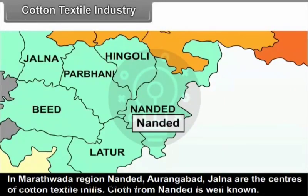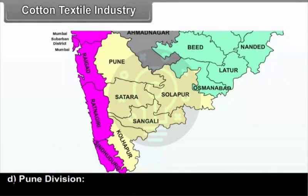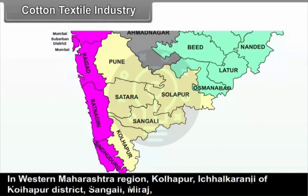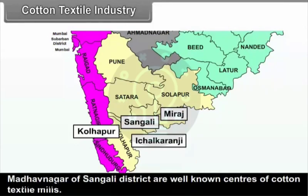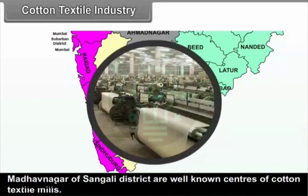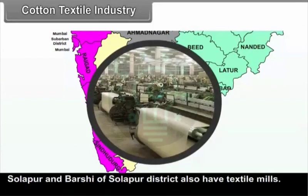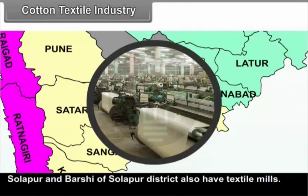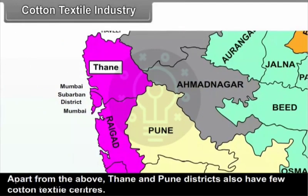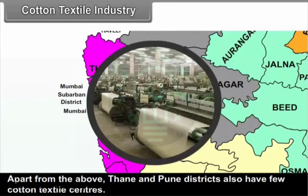Cloth from Nandur is well known. In Pune Division, western Maharashtra region cities of Kolhapur, Ichalkaranji of Kolhapur district, Sangli, Miras, and Madhavnagar of Sangli district are well-known centres of cotton textile mills. Solapur and Barsi of Solapur district also have cotton textile mills. Apart from the above, Thane and Pune districts also have a few cotton textile centres.